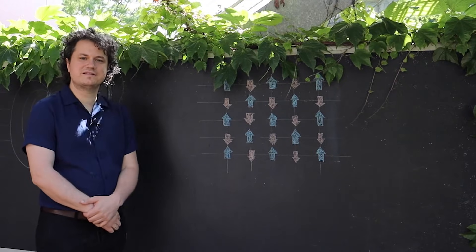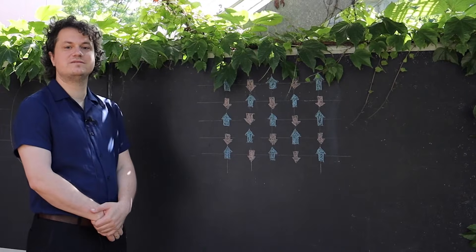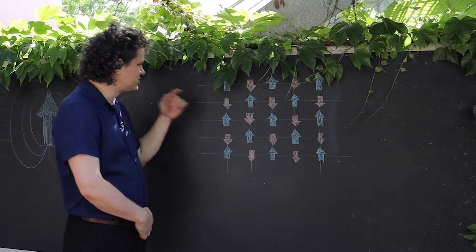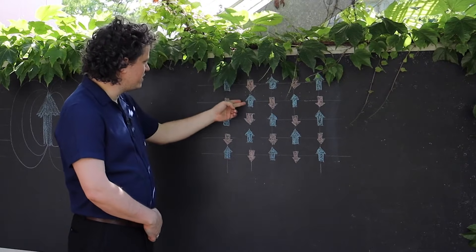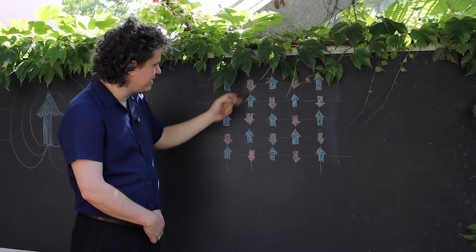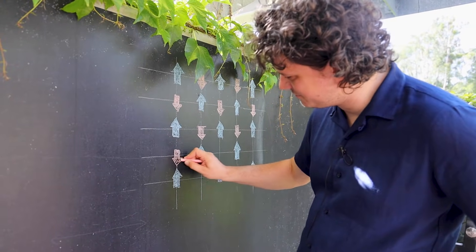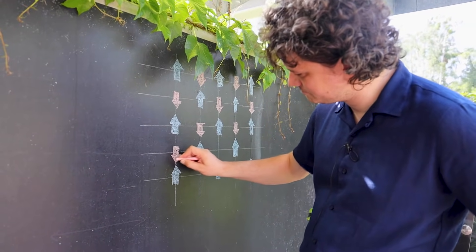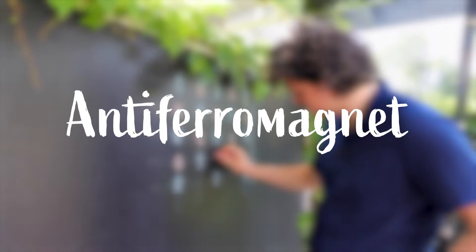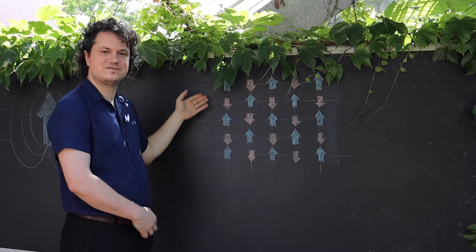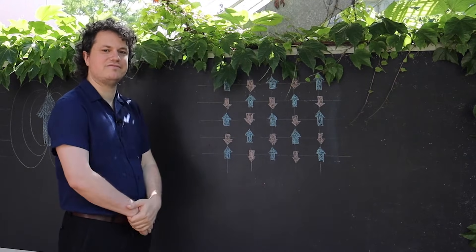While these ferromagnets are very well known, there's also other patterns in which the elementary magnets, the spins, can align. We see the blue arrows which all point up and the red arrows which all point down. Two neighboring spins align in the opposite direction and this is called an anti-ferromagnet. This is a very interesting pattern but it does not give rise to a macroscopic magnetic field.